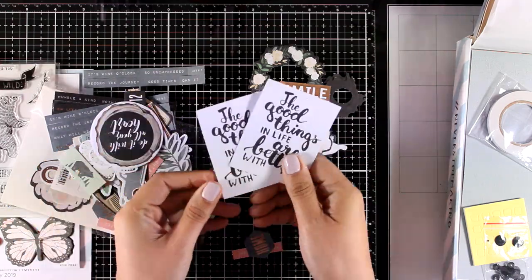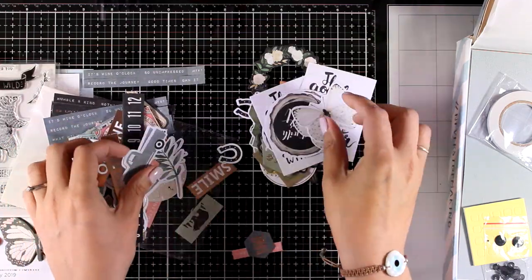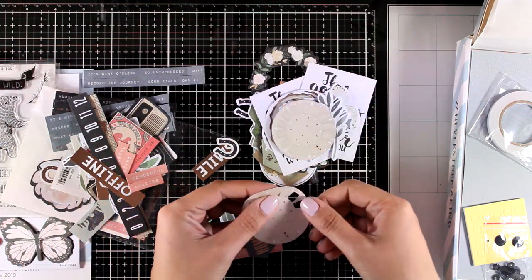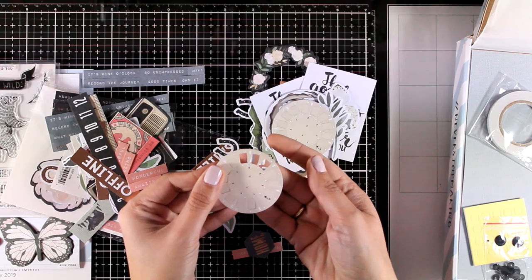Some of those die cuts have foiling on top, a lovely rose gold foiling and not only you get images but also you will get strips of sentiments that you can use directly on your cards.